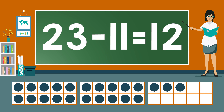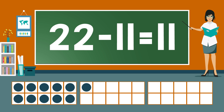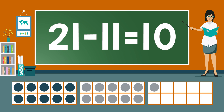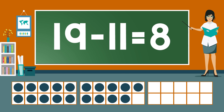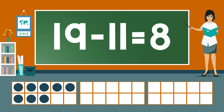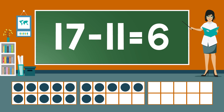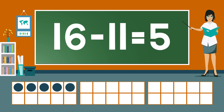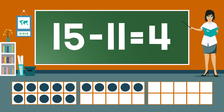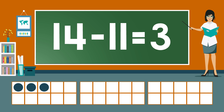23 minus 11 equals 12. 22 minus 11 equals 11. 21 minus 11 equals 10. 20 minus 11 equals 9. 19 minus 11 equals 8. 18 minus 11 equals 7. 17 minus 11 equals 6. 16 minus 11 equals 5. 15 minus 11 equals 4. 14 minus 11 equals 3.